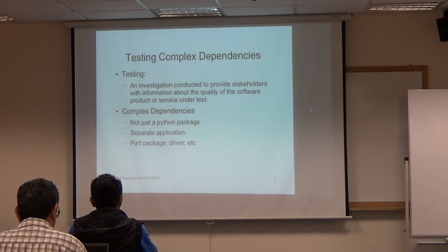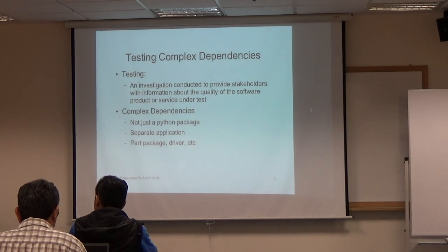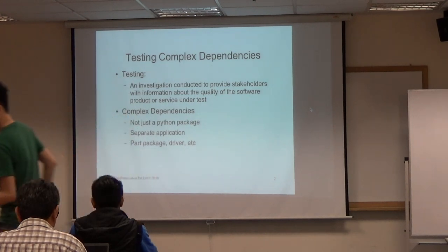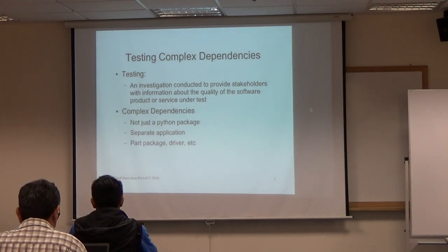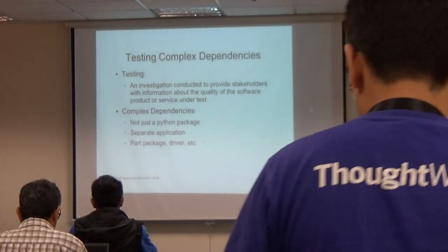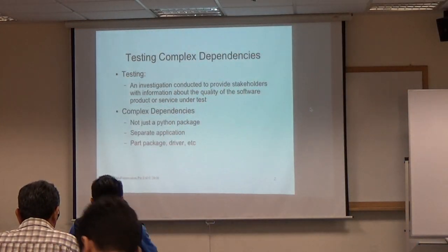What do we mean by complex dependencies? It's not a Python package — you drive a web browser, or some external piece of software. But then your company does something you can't replicate yourself. You depend on it, and how are you going to check what you're doing or prevent that from affecting the rest of your environment?